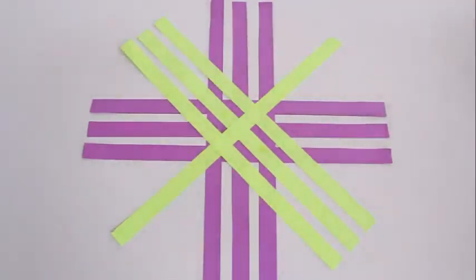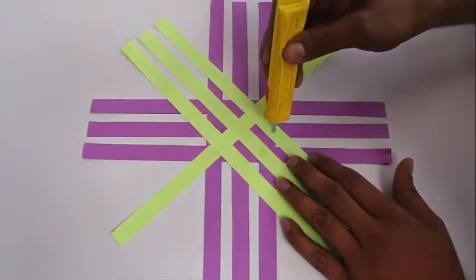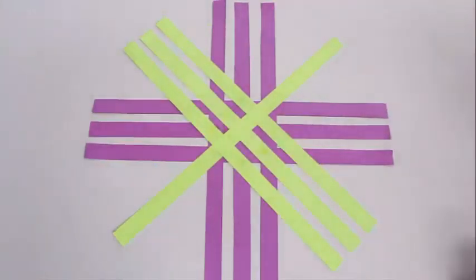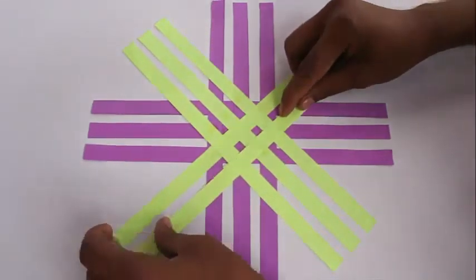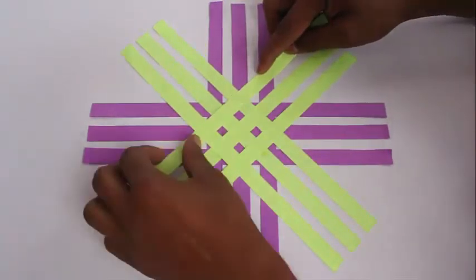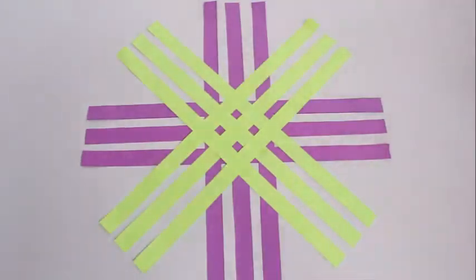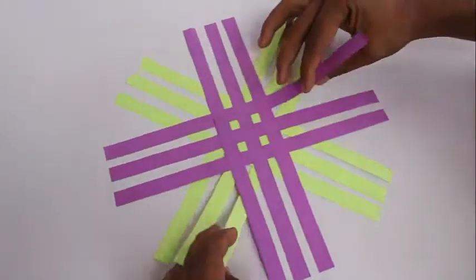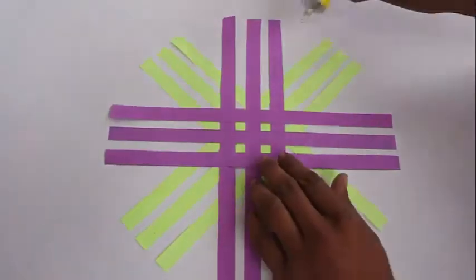You are going to do the same to the other strip. Apply glue and stick two more green strips. Now you can see the pattern is quite similar. The pattern of the magenta strips and the green strips is quite similar, only that the green strips are just phased out by 45 degrees.